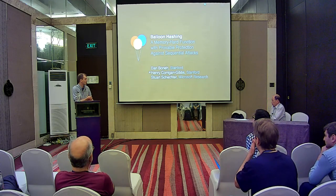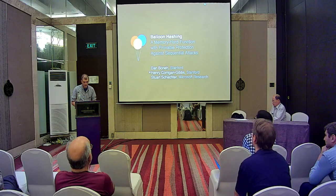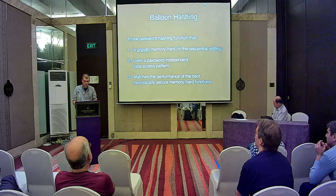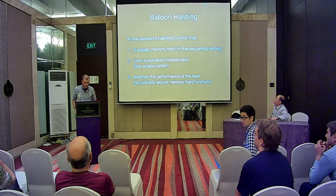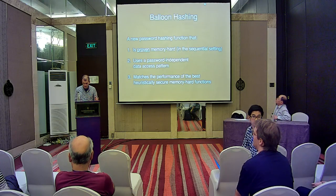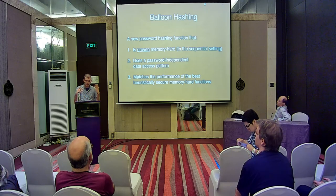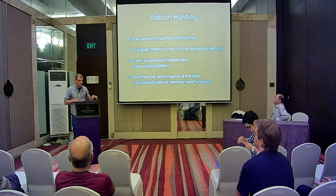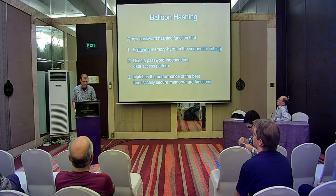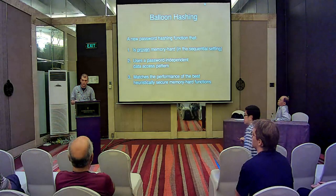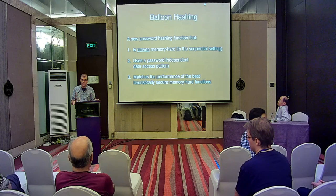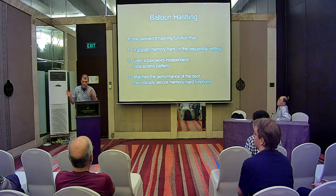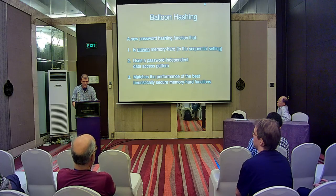I'm going to be talking about balloon hashing, which is joint work with Dan and Stuart. In summary, balloon hashing is a new password hashing function that has three desirable properties: it's proven memory hard in a certain model, it uses a password-independent data access pattern, and it's practically good — it matches the performance of the best heuristically secure memory hard functions. The idea is we're getting provable security without having to pay much in terms of performance cost.